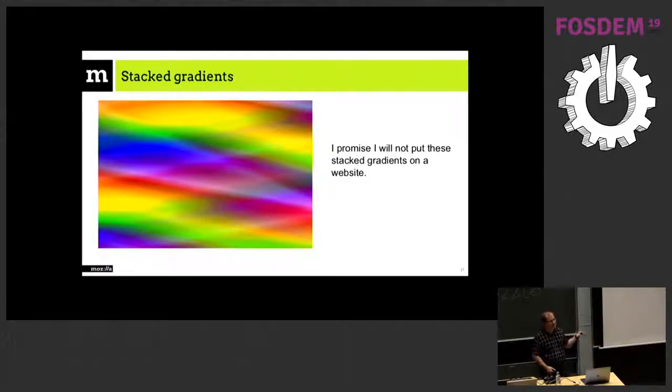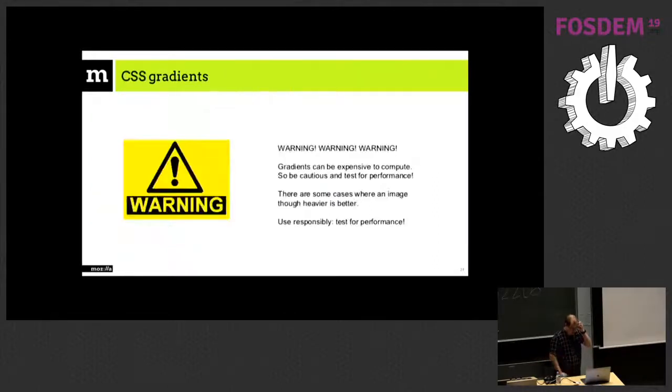It's gradients, so there is still a warning that it's computationally heavy. It's getting better, but you have to pay attention when you have gradients. Sometimes an image is much more efficient because you just show the image and it doesn't have to compute. Especially on a mobile website or the mobile version of a website, you don't want to drain the battery to have shiny gradients and an image can be more efficient. So you have to test, especially if you are using complex gradients, you have to check what impact it has on your performance.